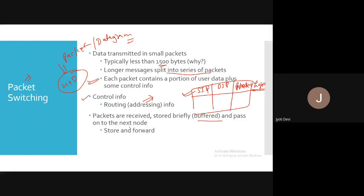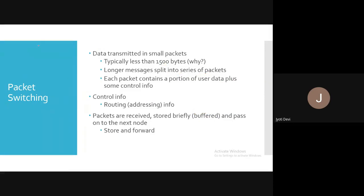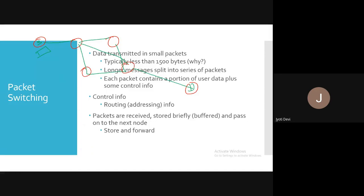This is the store and forward technique. It is your source, it is your destination, and between source and destination there is a path. Inside the path, there is no such dedicated path mentioned here. You just give your packet to the first router — R1, R2, R3, R4.